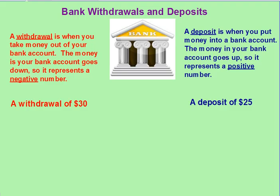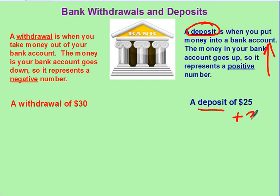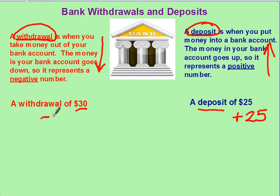Bank accounts are an interesting thing. Deposits — when you put money into the bank, your bank account goes up. So if I make a deposit of $25, the integer I'm talking about is a positive 25. If I make a withdrawal of $30, my bank account will go down, so a withdrawal of $30 would be a negative 30.